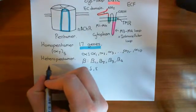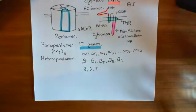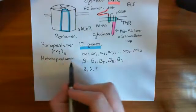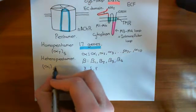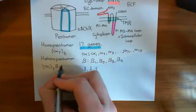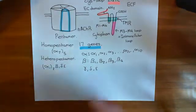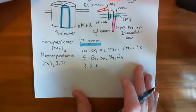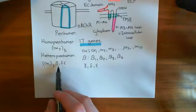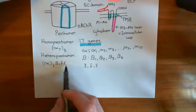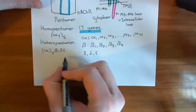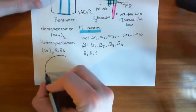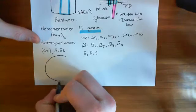The nicotinic acetylcholine receptor on skeletal muscle cells is a heteropentamer, and its subunit composition is alpha-1 (×2), beta-1, delta, epsilon. This tells you how much of each subunit you have: two alpha-1 subunits, one beta-1, one delta, and one epsilon. But this doesn't tell you how to actually stick them together relative to one another, because they have to be arranged in a specific way.